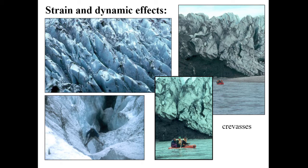One of the first controls on the morphology of a glacier surface is strain and dynamic effects — in other words, the movement of the glacier. The most obvious effect of strain or movement at the glacier surface are crevasses, which open up in response to extending strain. The presence or absence of crevasses, and the orientation of crevasses, tell us about the strain pattern on the glacier surface.